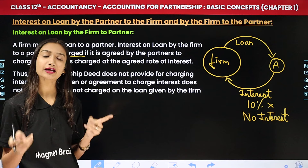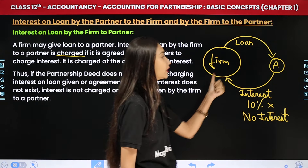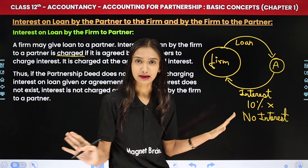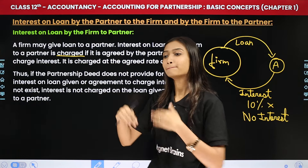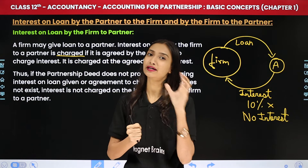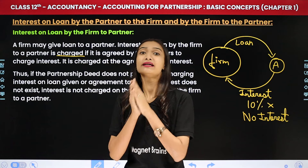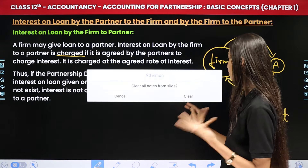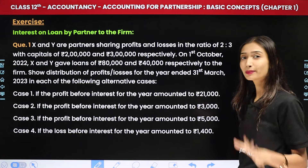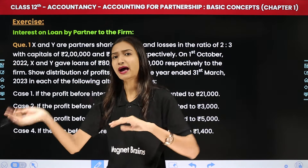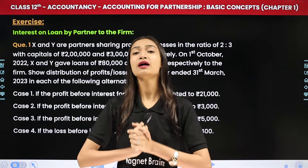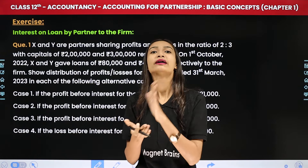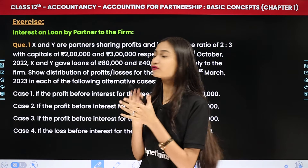So to summarize: if the firm gives a loan to a partner and an interest rate is written in the partnership deed, say 10%, then 10% is charged. But if no rate is mentioned in the deed, then as per the Partnership Act, no interest is charged at all — the partner pays nothing. Now we will solve questions related to both these concepts.